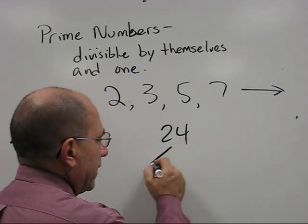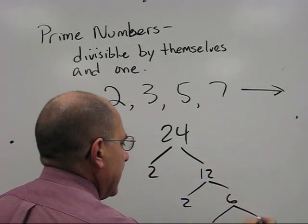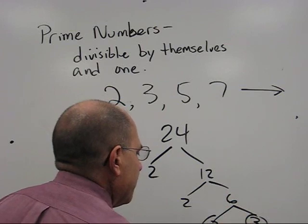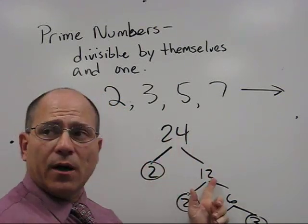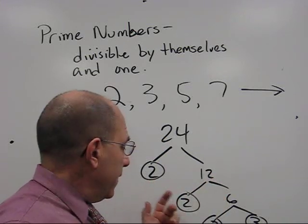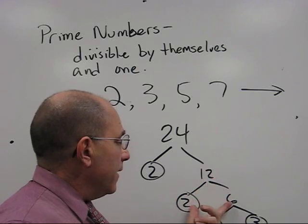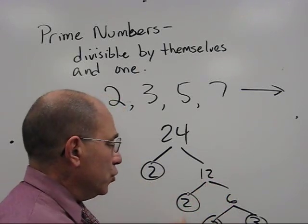Now the factor tree some of us may recognize from school. 2 times 12, 2 times 6 and 2 times 3. Basically what we've just done is we've worked our way down from 24. We said that's 2 times 12. We circle the prime number knowing we don't have to go any further there. 2 times 6 for 12 and we circle the prime and finally 2 times 3. Our primes are 2, 2, 2 and 3.